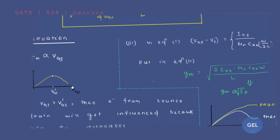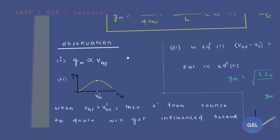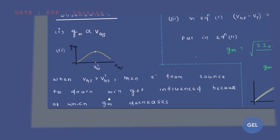But once you increase the VGS value to an excessive extent, there will be excessive positive charge appearing at the gate. Due to this excessive charge, the movement of electrons gets disturbed — electrons deviate from their path. There will be deviations in the path, due to which the current value is affected and your GM value will decrease. So electron flow from source to drain gets influenced, causing GM to decrease.